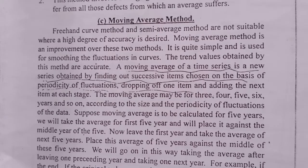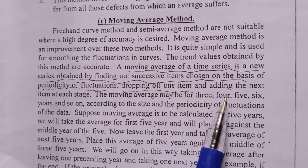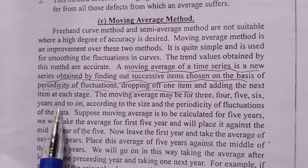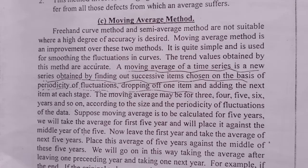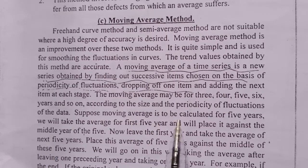Moving average may be for 3, 4, 5, 6 years and so on. So if moving average is to be calculated for 5 years, we will take the average for the first 5 years and place it against the middle year of the 5.